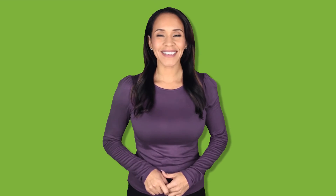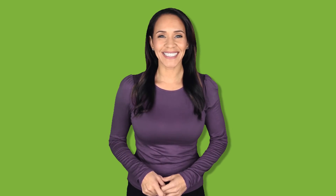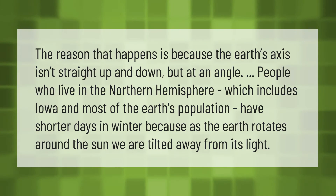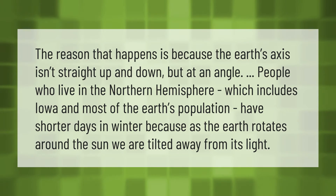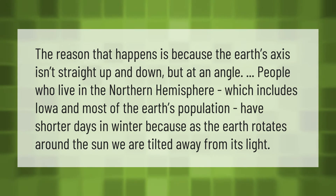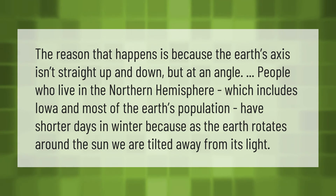The reason that happens is because the Earth's axis isn't straight up and down, but at an angle. People who live in the northern hemisphere, which includes Iowa and most of the Earth's population, have shorter days in winter because as the Earth rotates around the sun, we are tilted away from its light.